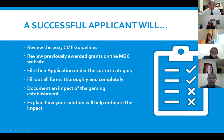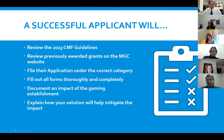What does a successful application look like? We ask that each of you review the community mitigation fund guidelines, which were attached to your invitations. You can also look at previously awarded grants on our website for ideas. File the application under the correct category — if you have a real question about what category to use, we'd be happy to chat with you about that. Fill out all forms thoroughly and completely.